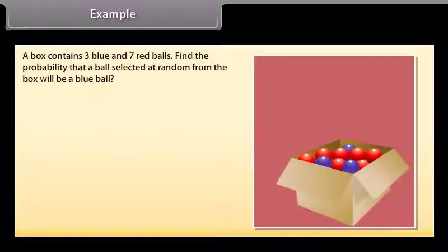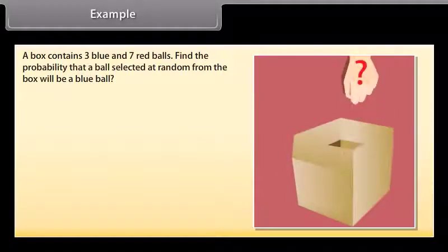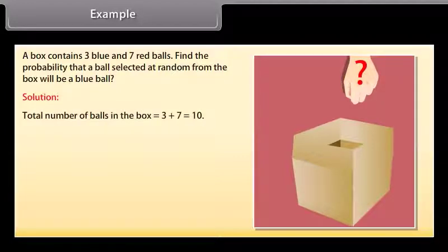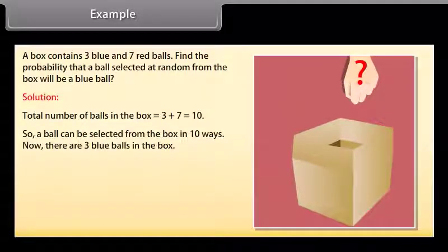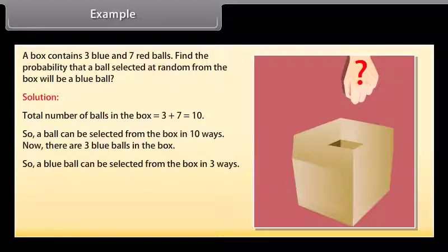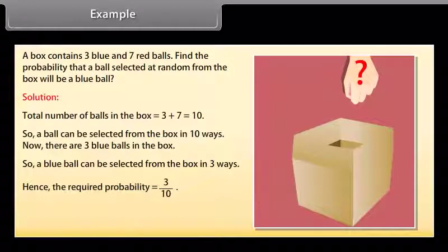A box contains 3 blue and 7 red balls. Find the probability that a ball selected at random from the box will be a blue ball. Solution: Total number of balls = 3 + 7 = 10, so a ball can be selected in 10 ways. There are 3 blue balls, so a blue ball can be selected in 3 ways. Hence, the required probability is 3/10.